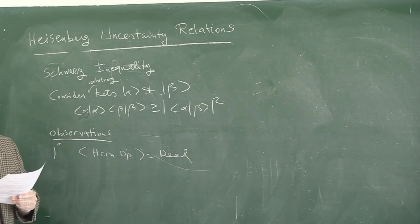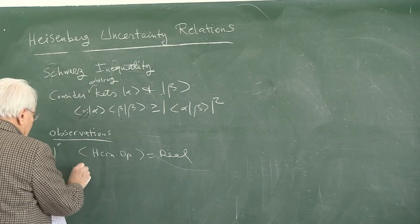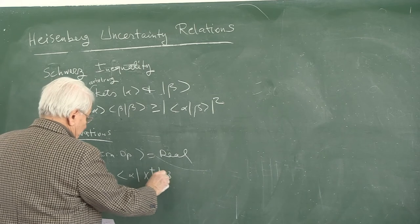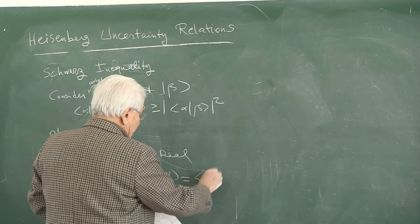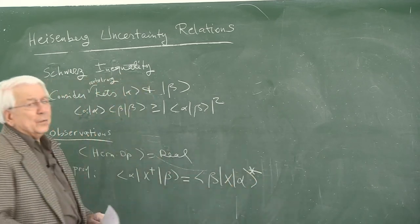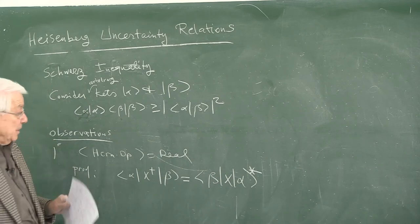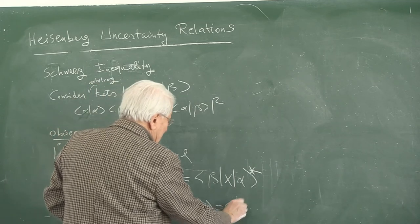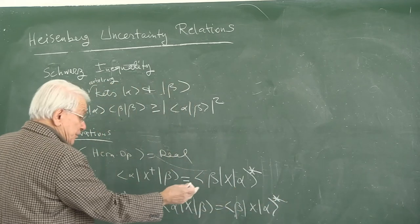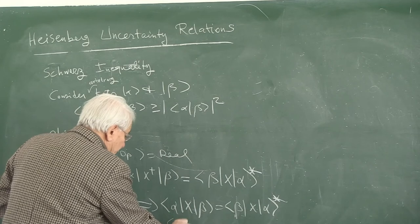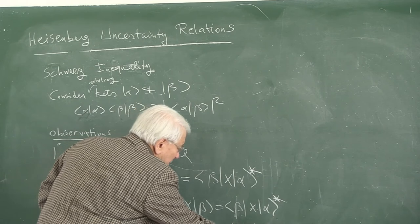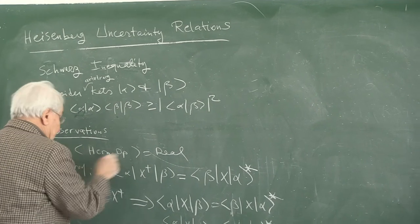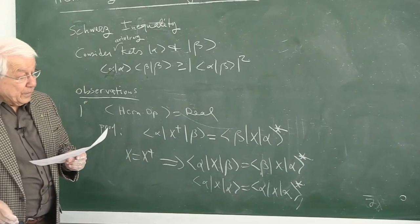Proof: by the definition of Hermitian conjugate, ⟨β|X†|α⟩ = ⟨β|X|α⟩*. If X is Hermitian (X† = X), then ⟨α|X|β⟩ = ⟨β|X|α⟩*. Setting β = α: ⟨α|X|α⟩ = ⟨α|X|α⟩*. It equals its own complex conjugate, so the expectation value of a Hermitian operator is real in an arbitrary ket.